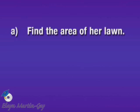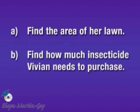For part A, we simply want to find the area of her lawn. Part B then, find how much insecticide Vivian needs to purchase.